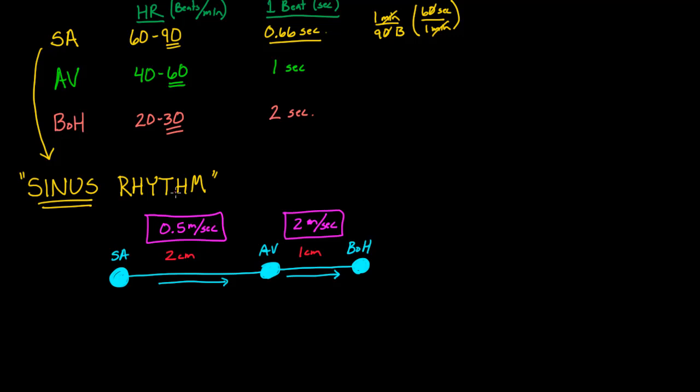If you think about it, if you just multiply them, you should be able to get a time, how long it will take a signal to get from the SA to the AV node. We know that the SA node fires every 0.66 seconds. That much we figured out already. So the question is, can it get a signal to the AV node before the AV node fires by itself? Can it get a signal down there in less than one second? You're trying to beat out this time. And can it get a signal to the bundle of His in less than two seconds? You're trying to beat out that time as well.